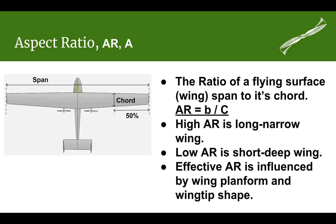The symbol for aspect ratio is either A or AR — you'll see it both ways in the literature. The aspect ratio is the span of a flying surface over the chord of the flying surface. It doesn't have to be a wing; it can also be rudders, vertical stabilizers, and horizontal stabilizers. Just about any flying surface on the airplane will have an aspect ratio used in the design of that surface. The span is represented by the letter B, and the chord by an uppercase or lowercase letter C.